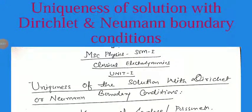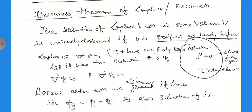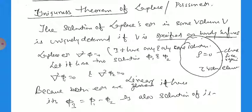Good morning everyone. As MSc Physics students this semester, we will discuss classical electrodynamics. The key topic is the uniqueness of the solution with Dirichlet and Neumann boundary conditions. What is the uniqueness theorem? The uniqueness theorem states that the solution of the Laplace or Poisson equation in some volume V is uniquely determined if the potential is specified on the boundary surface.